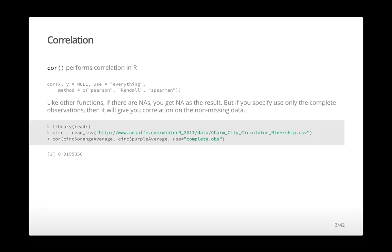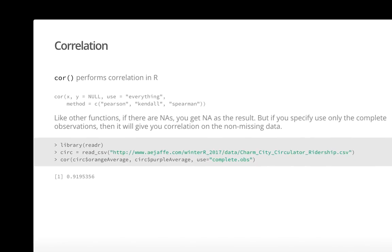The `cor` function is the general function to do correlations. You just pass in an x and a y vector, and there are different options for what kind of data you use to get that correlation. We're going to read in the circulator data set using `read_r`, and compute the correlation between the orange average and the purple average using complete observations.